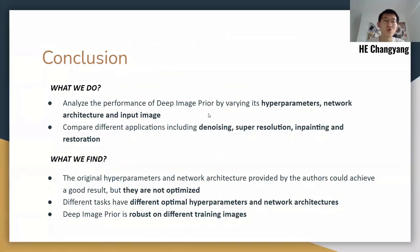In conclusion, in this work we analyze the performance of deep image prior by varying its hyperparameters, network architecture, and input image. We also compare different applications, including denoising, super-resolution, inpainting, and restoration. Through this study, we find that the original hyperparameters and network architecture provided by the authors could achieve a good result, but they are not optimized. Different tasks have different optimal hyperparameters and network architectures. Also, deep image prior is robust on different training images. That's all our talk. Thank you very much.